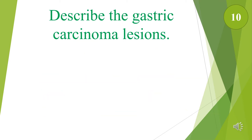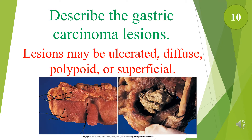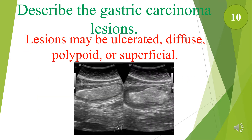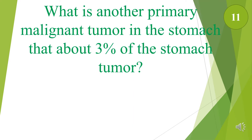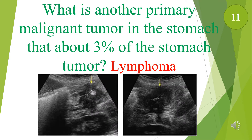Describe the gastric carcinoma lesions. Gastric carcinoma lesions may be ulcerated, diffused, polypoid, and superficial. This is how gastric carcinoma lesions look in ultrasound. What is another primary malignant tumor in the stomach that accounts for about 3 percent of stomach tumors? Lymphoma.